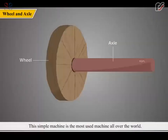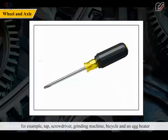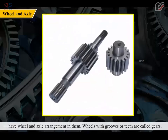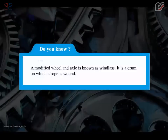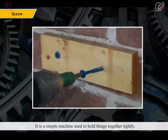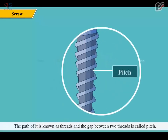The wheel and axle is the most used simple machine all over the world. A wheel attached to a rod is called a wheel and axle arrangement. For example, tap, screwdriver, grinding machine, bicycle and an egg beater have wheel and axle arrangement in them. Wheels with grooves or teeth are called gears. A modified wheel and axle is known as a windlass — it is a drum on which a rope is bound. A screw is a revolving inclined plane or an inclined plane wrapped around a cylinder. It is a simple machine used to hold things together tightly. The path of it is known as threads and the gap between two threads is called pitch.